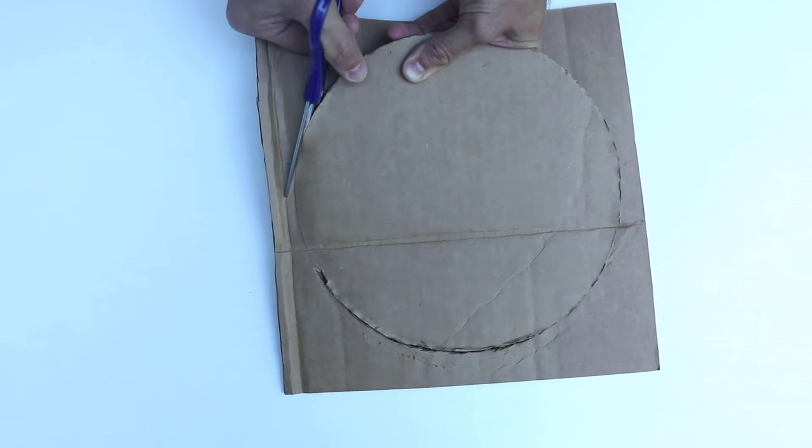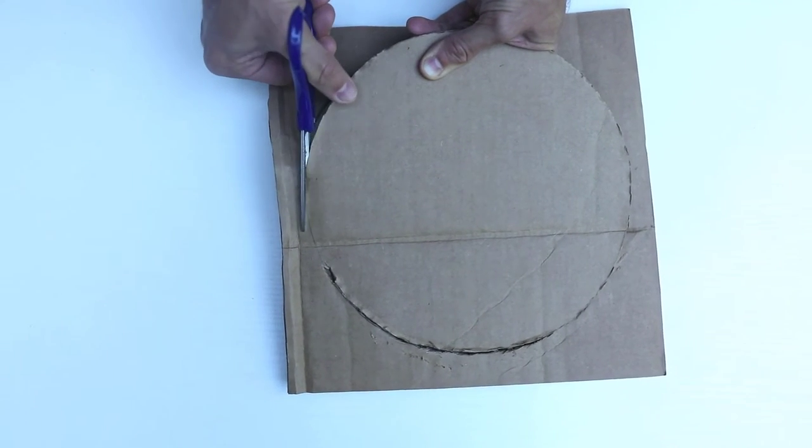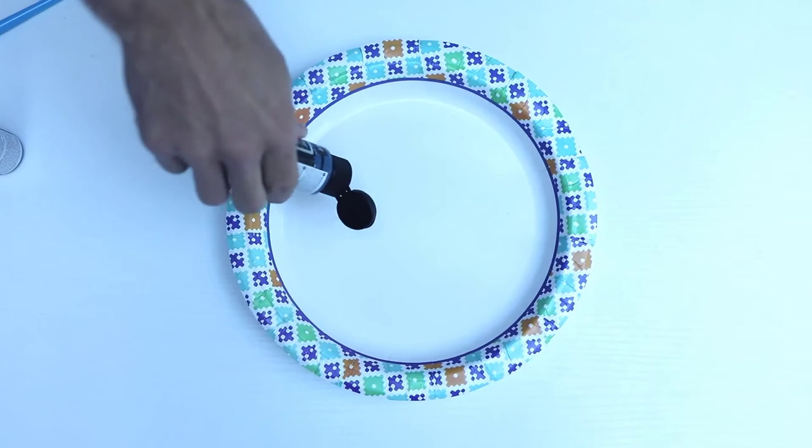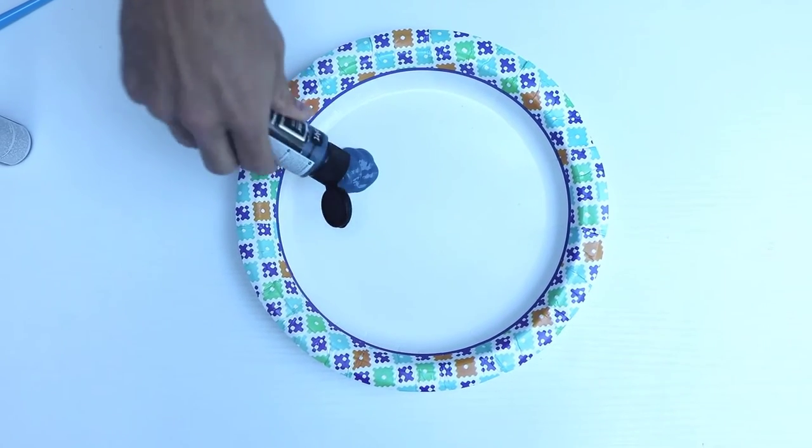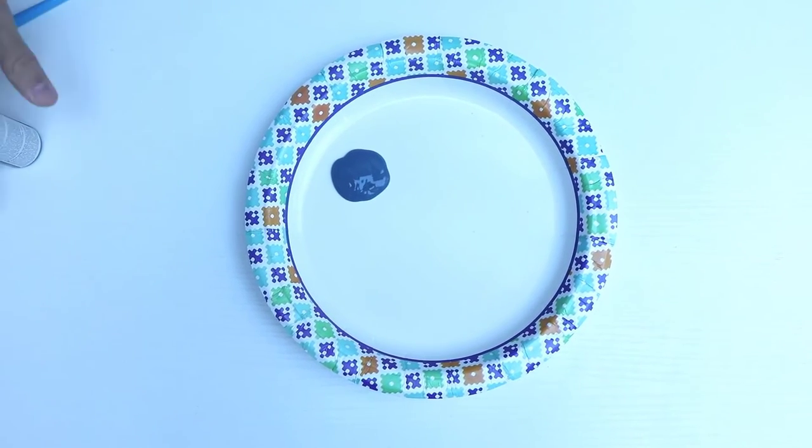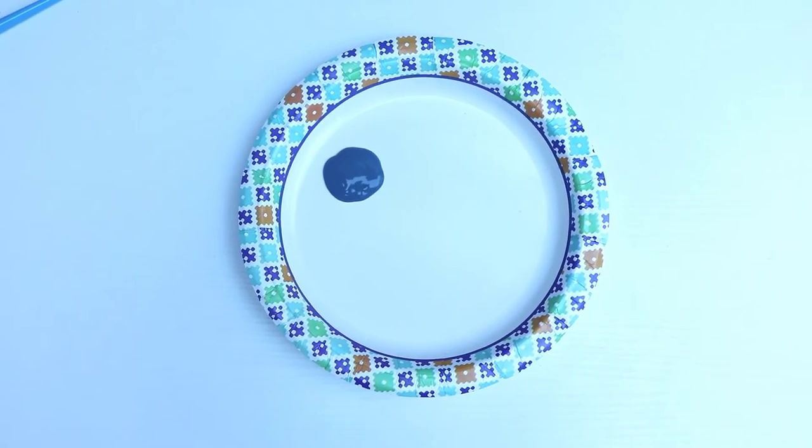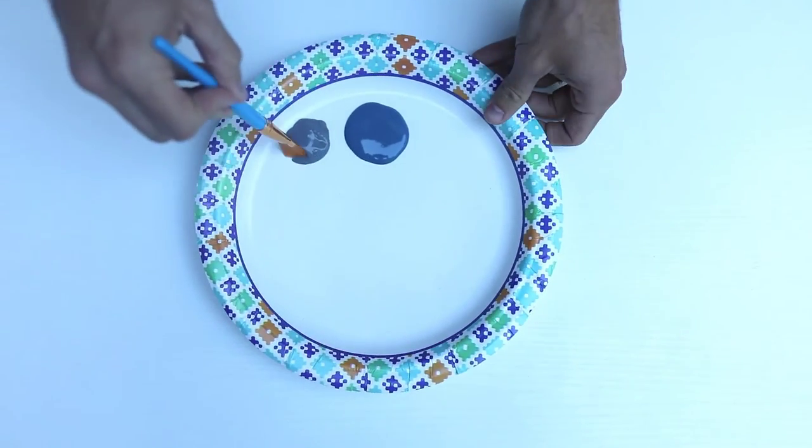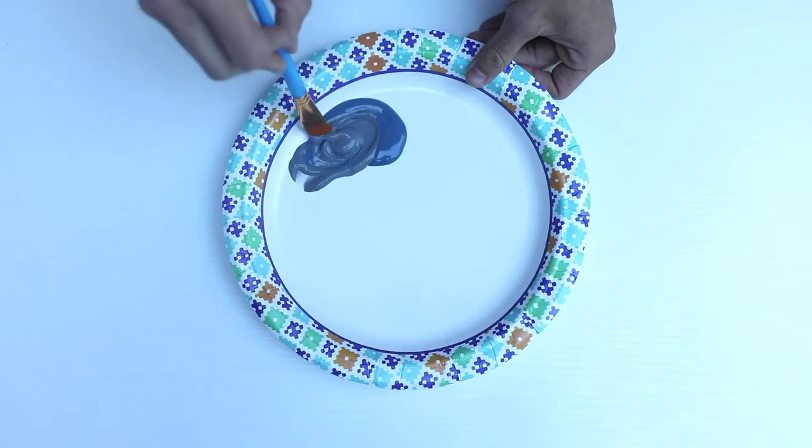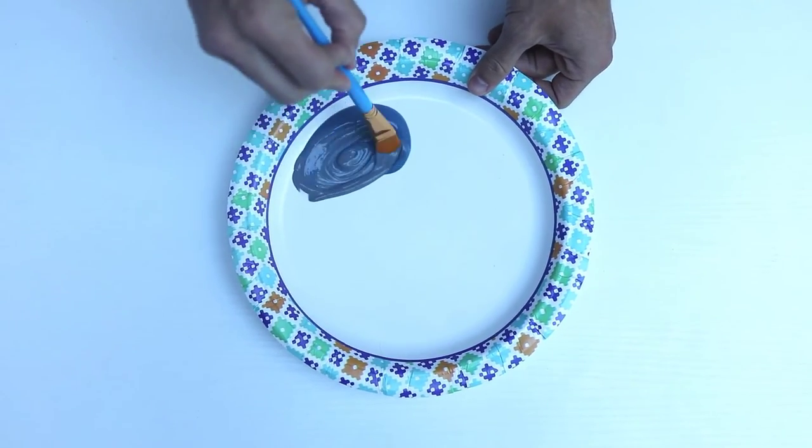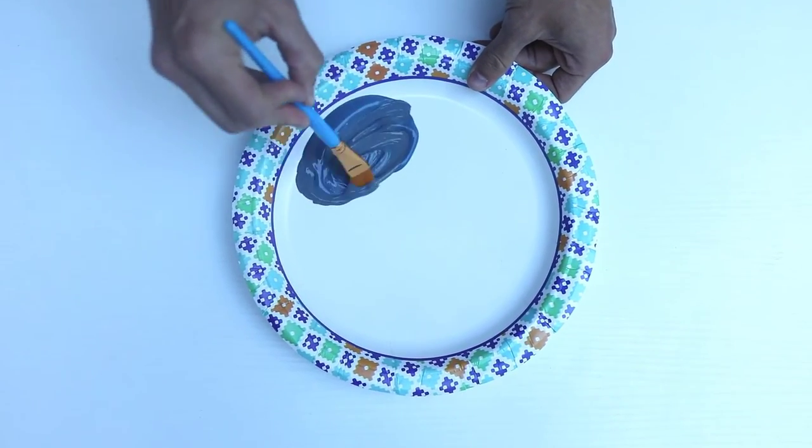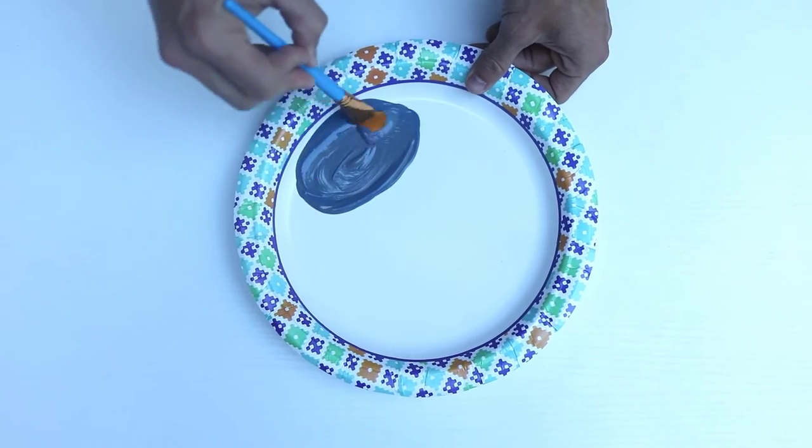Now that you have a perfect circle, go ahead and cut that out with a pair of scissors. Take your paper plate and squirt blue as well as black onto the plate. If you also have gray, that's fine. We recommend black or gray. Mix them together until it's the perfect color for your space diorama.